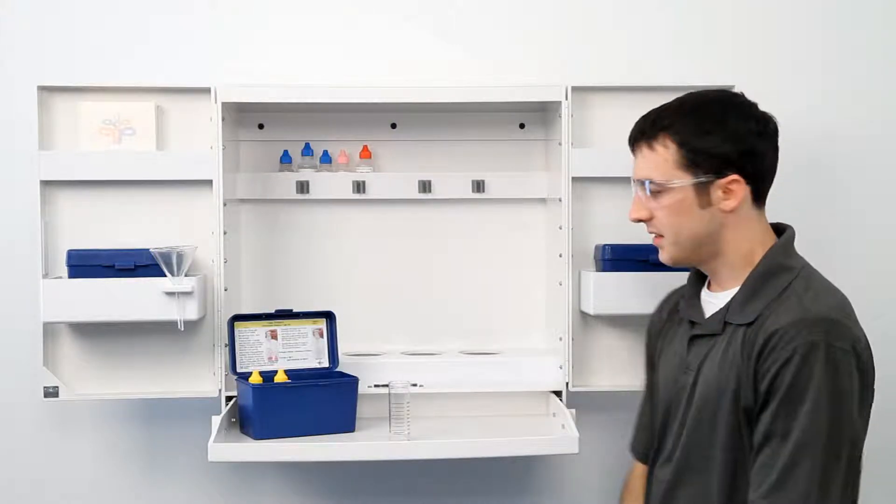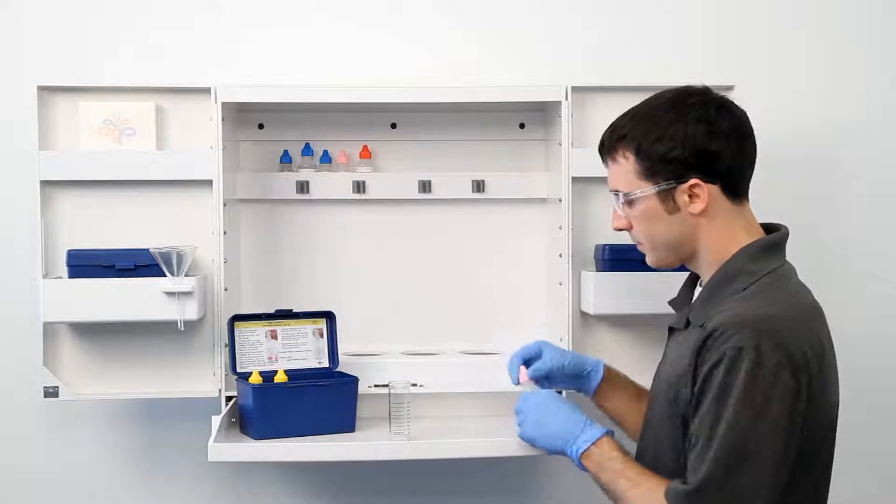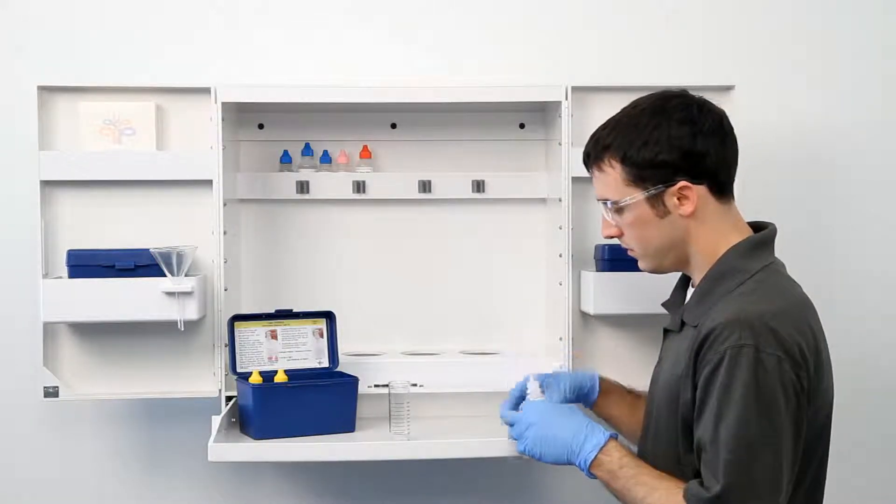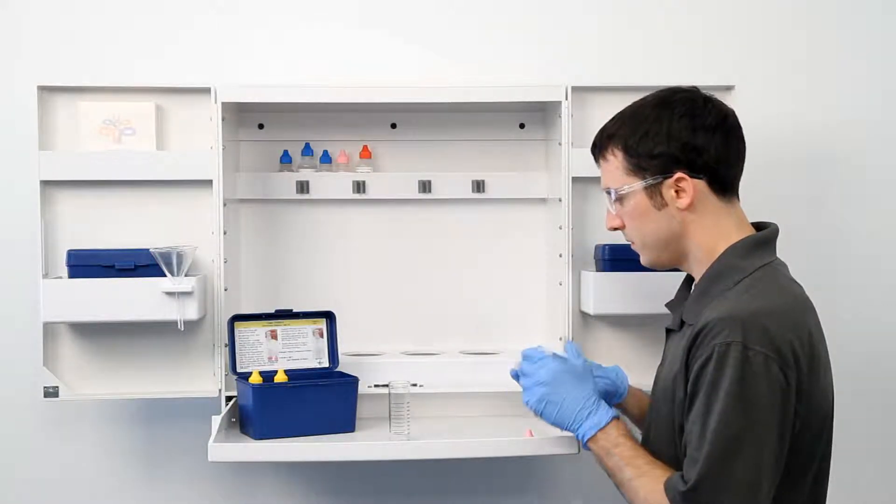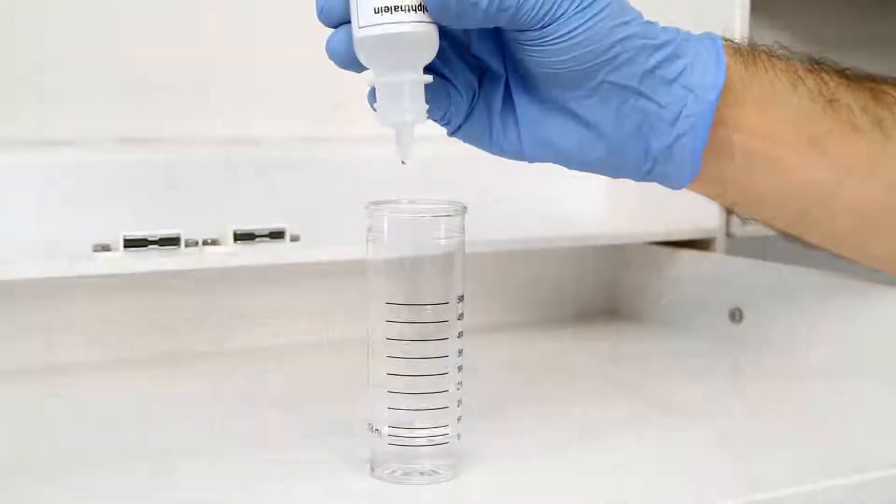Once you have gathered an accurate sample, the next step according to the Endpoint ID procedure is to add three drops of phenylphthalein indicator. The bottle contains a dropper tip, so it's important to hold the bottle vertically to get a consistent drop size.